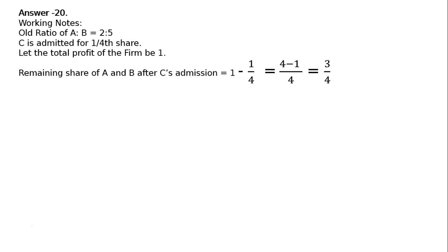If nothing is mentioned, it will be shared in the ratio of 2 is to 5. A's new share, this 3 upon 4 multiplied by 2 upon 7 for A, that is 6 upon 28. B's new share is 3 upon 4 multiplied by 5 upon 7, that is 15 upon 28.